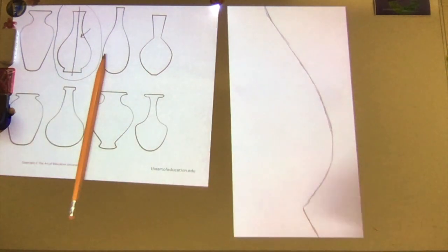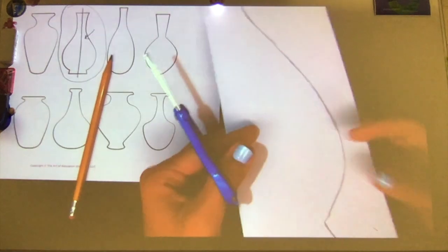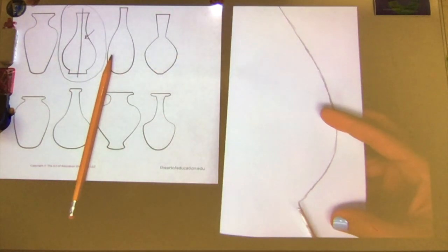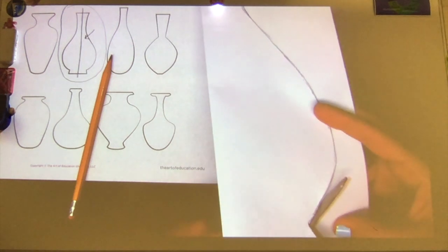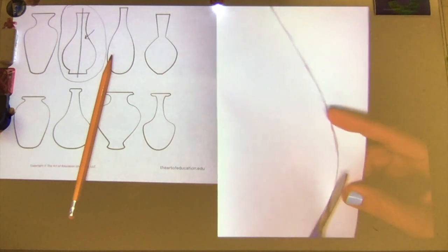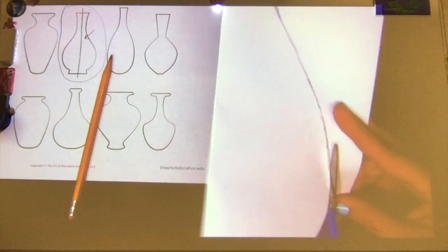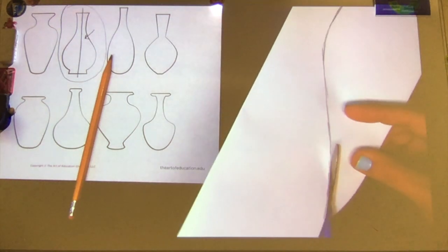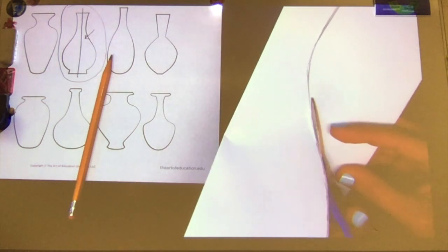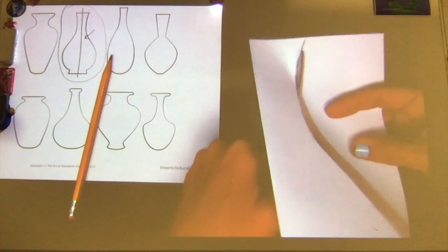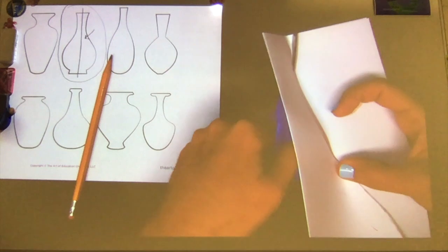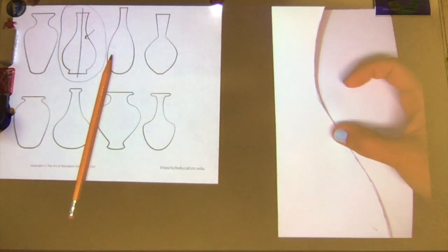Now what you're going to do next is cut through both pieces of paper. So just follow your line. And then carefully cut along that line, cutting through the top piece and the bottom piece of paper.